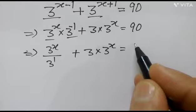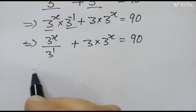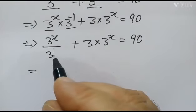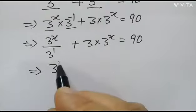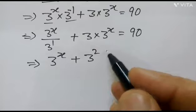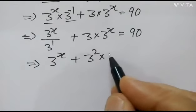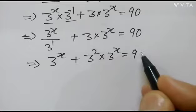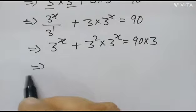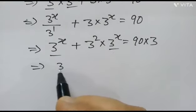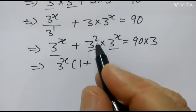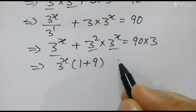If we multiply the whole equation by 3, we have 3 to the power x plus 3 squared into 3 to the power x is equal to 90 into 3, which is 270. If we take 3 to the power x as common, we have 3 to the power x times (1 plus 9) equal to 270.